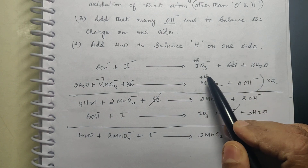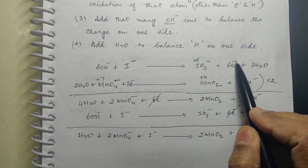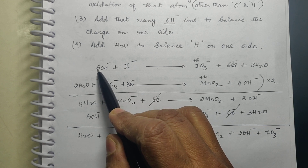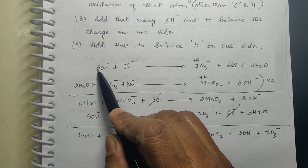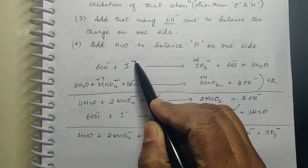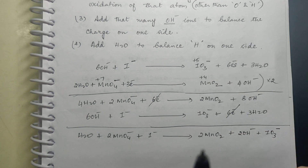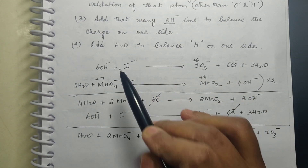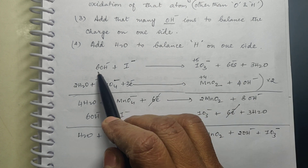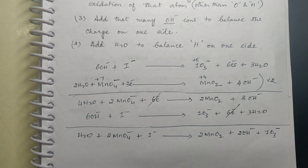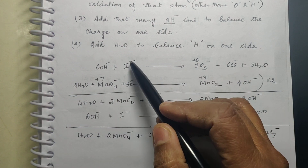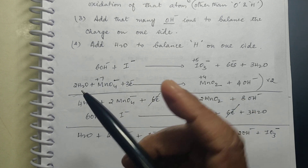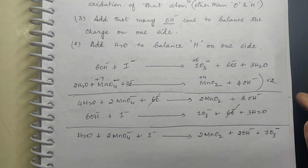You have to be very careful: if there is any other negative charge already present, then you have to reduce accordingly and then add OH⁻. If there is any positive charge on the product side, then one extra OH⁻ will be added. I'll give you one example for that.